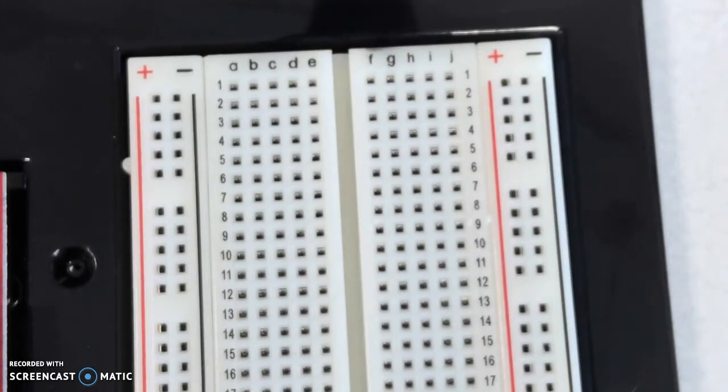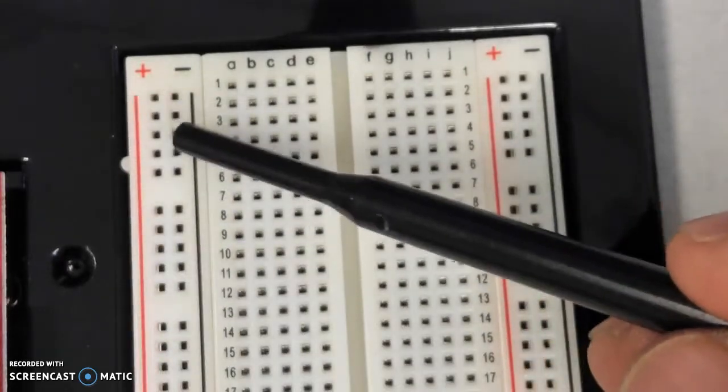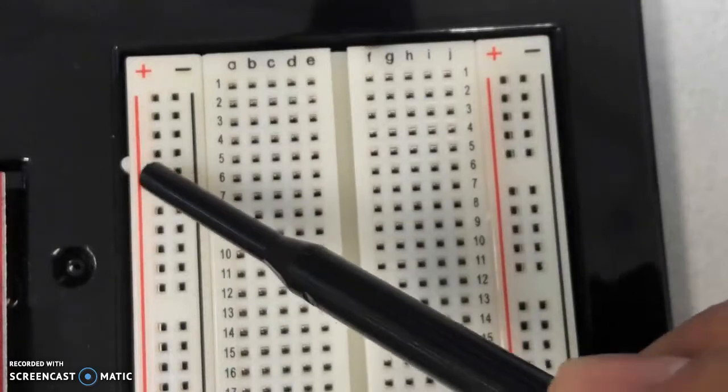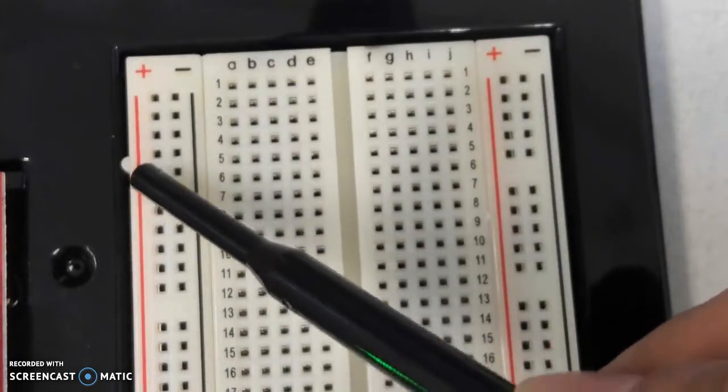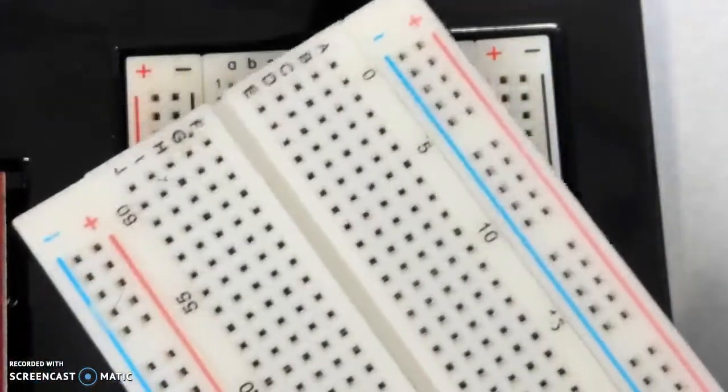So the breadboard has two rails or buses. This bus right here is vertically connected, so these holes are internally connected. So the basic idea behind a breadboard, I'll show you. Here's an example of a similar breadboard.